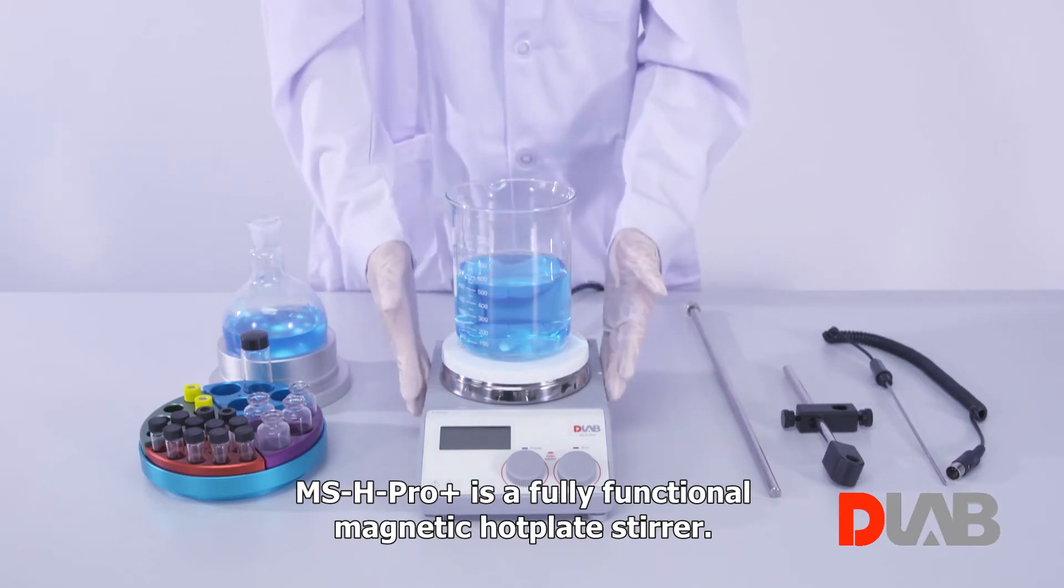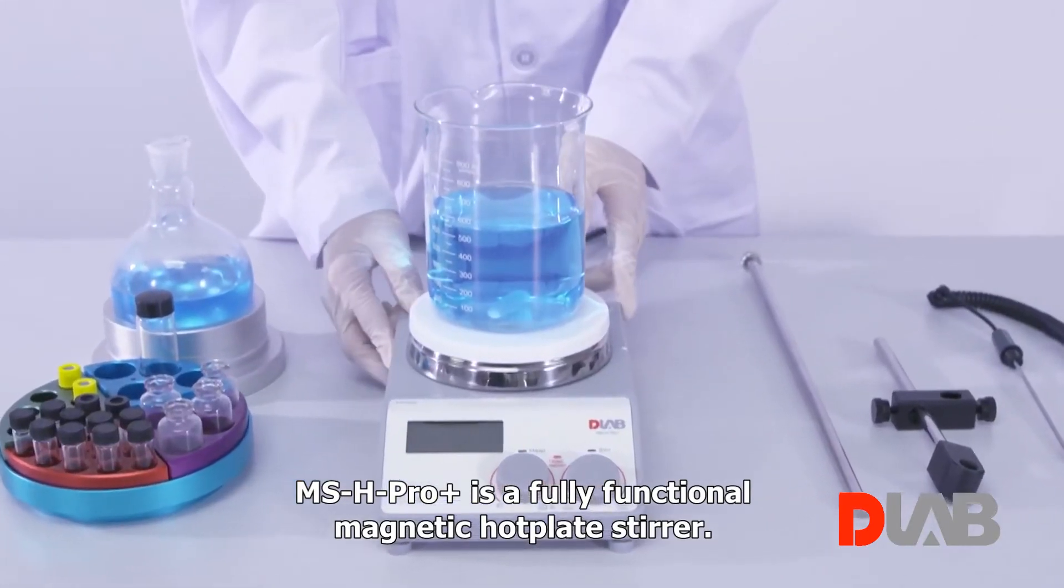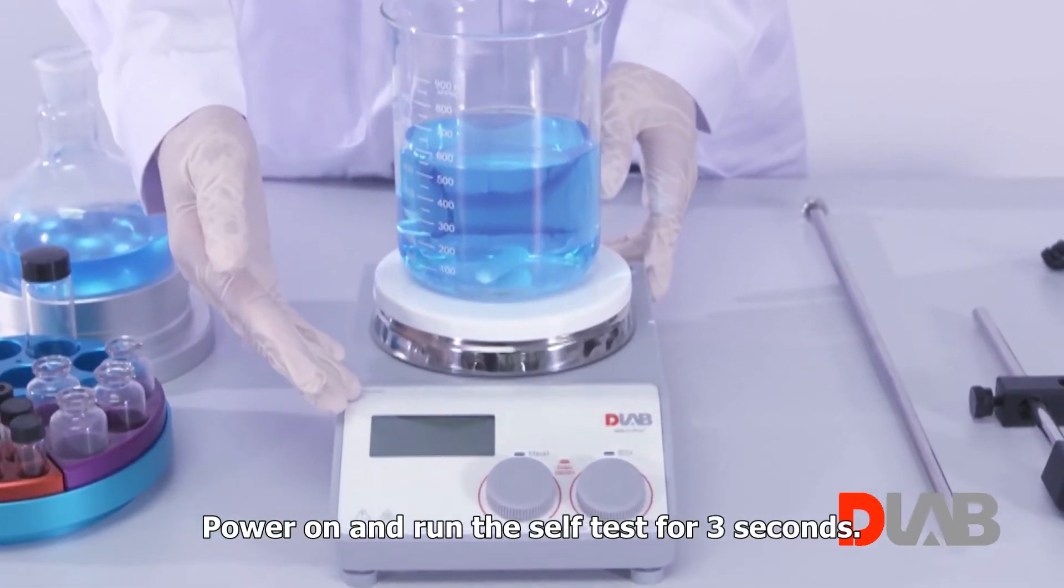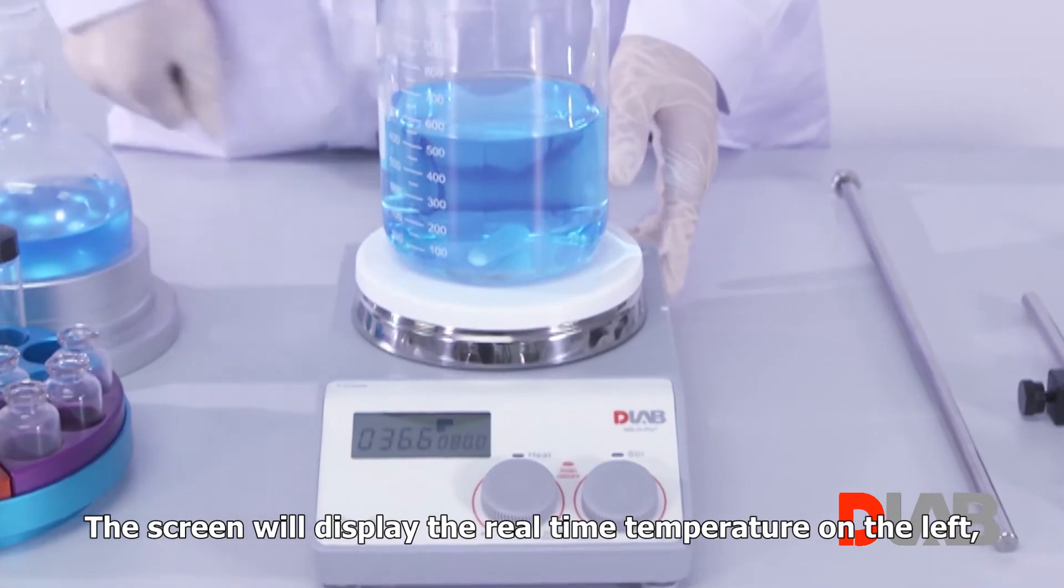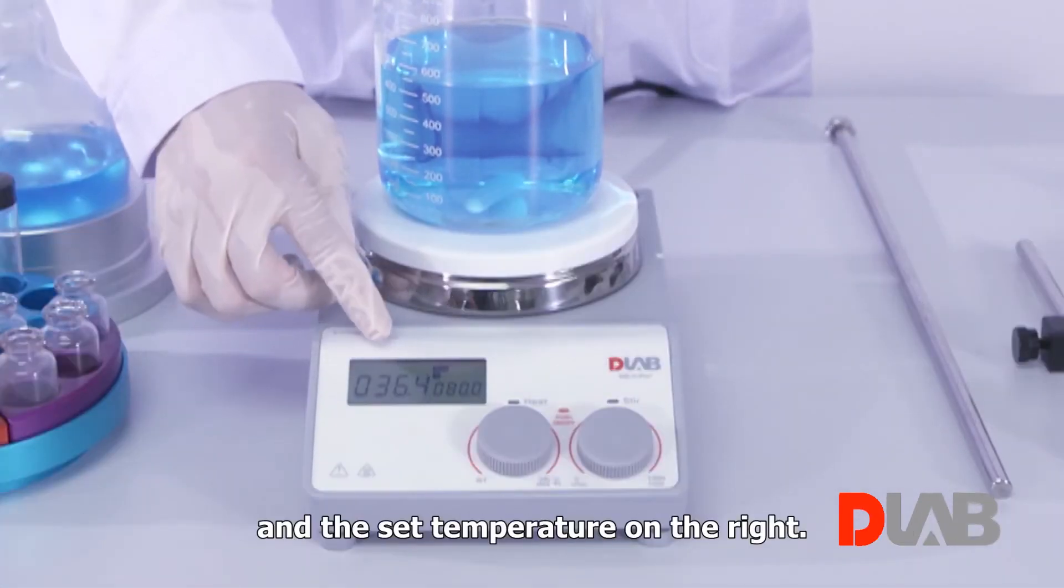MSH Pro Plus is a fully functional magnetic hot plate stirrer. Power on and run the self-test for three seconds. The screen will display the real-time temperature on the left and the set temperature on the right.